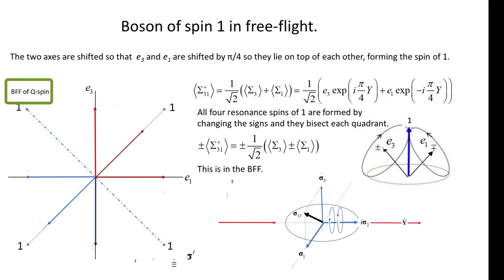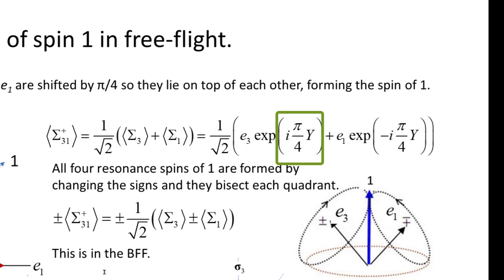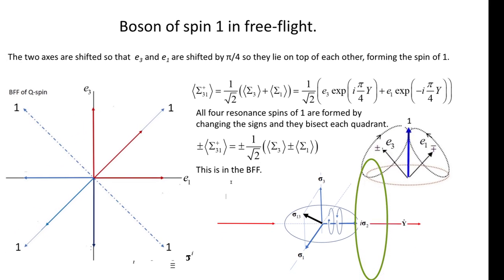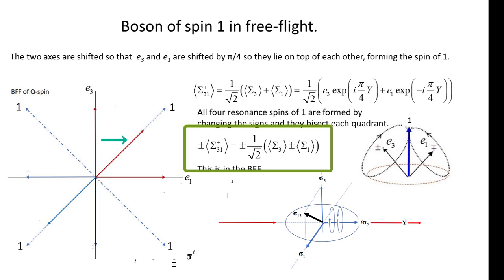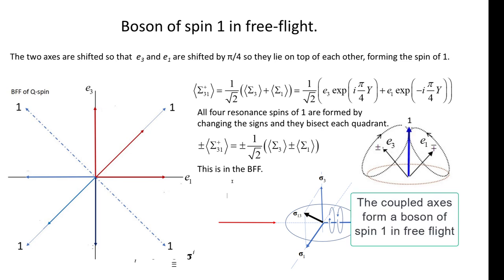Look at this from the body fixed frame, and note that the resonance spin of 1 has two parts that are shifted by pi over 4. E3 is rotated to the right by pi over 4, and E1 to the left, so they lie on top of each other and form the spin of 1. If the signs of the resonance spin are permuted, we get four possible resonance spins as bisectors of the body fixed frame. In free flight, only the resonance spin is present. The two axes are superposed. Recall again that the resonance spin is averaged to zero by the helicity, but nonetheless the two spins of one-half in free flight move towards the filter in a state of spin equals 1, or a boson.